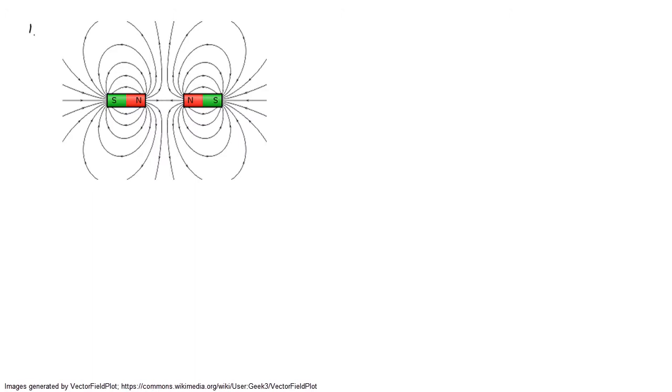In image one, the magnets are placed end to end, with the north poles facing each other. The field lines come out from the north pole and go to the south.